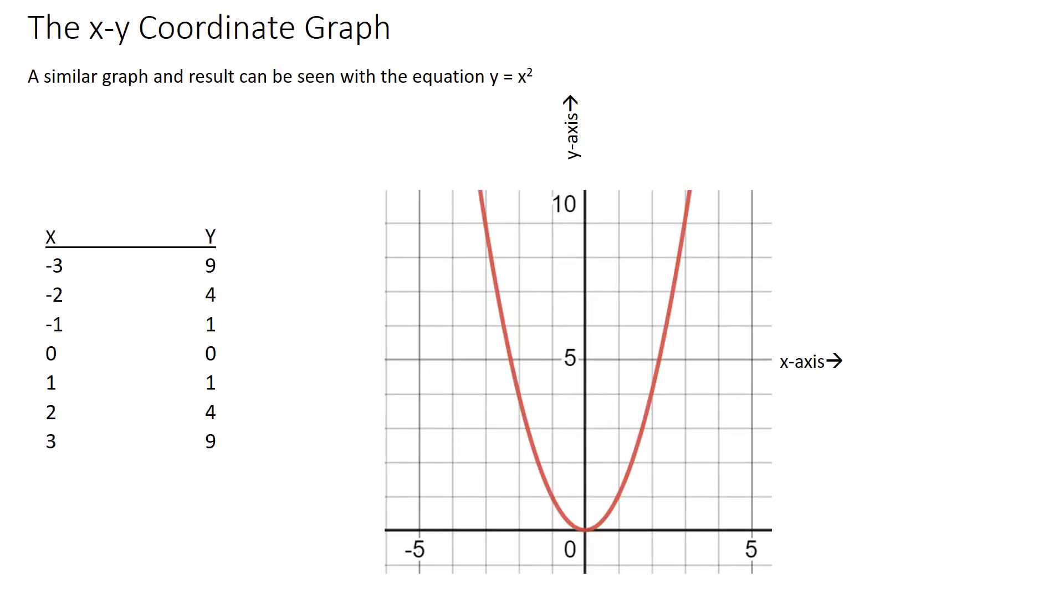Similarly, with this y equals x squared, I put negative 3 in for x, negative 3 times negative 3 is plus 9, negative 2 squared is 4, 0 squared is 0, and so on. And because everything becomes positive, it shapes like a u. This is called a parabola. We'll study this in quadratics next week.